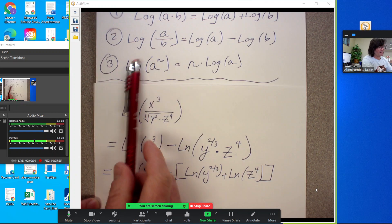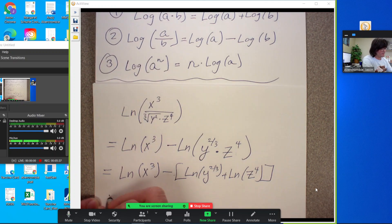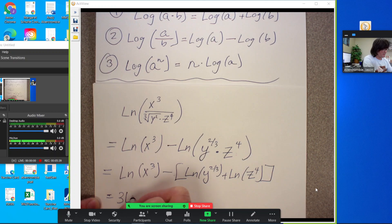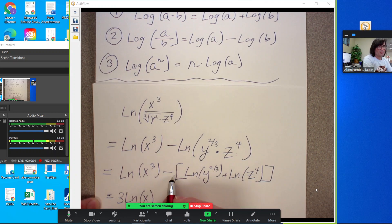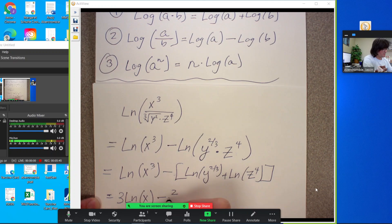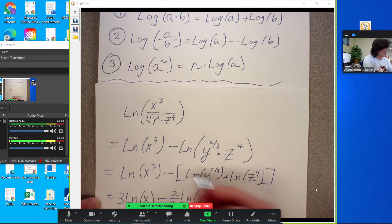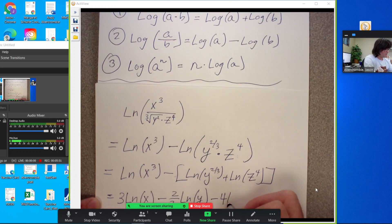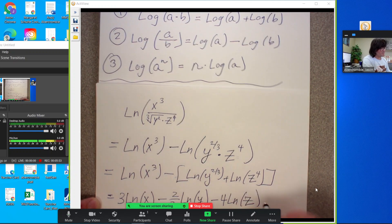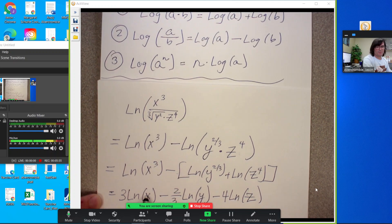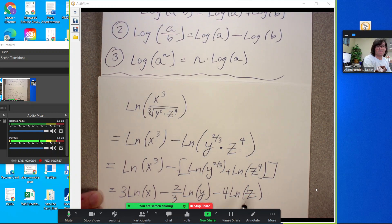So when I use that third log property where the exponent comes down as a coefficient, we're going to have three log of x there. I'm going to remember to distribute the minus at this time. Minus two thirds log of y and then minus four log of z. And I know I'm done because I just have log of x, log of y, log of z. Nothing else inside those logs besides just the single variables themselves.